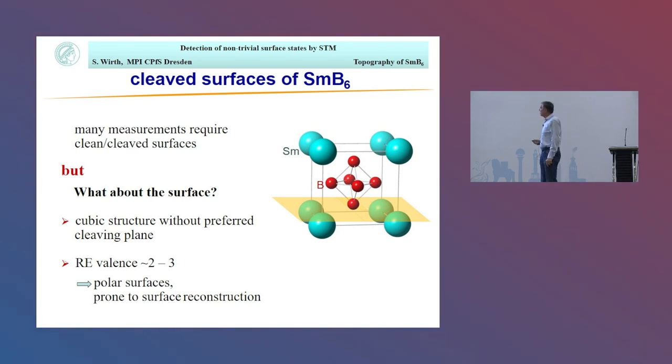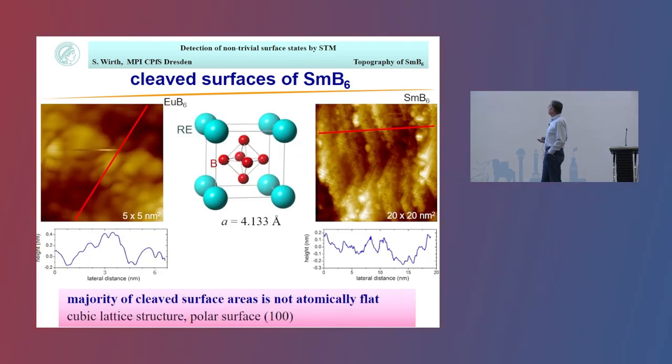But then we have to ask ourselves: what about the surface? Here in the case of samarium hexaboride, it's a cubic structure, so we don't have a preferred cleaving plane. And on top of that, the valence of the rare earth is between 2 and 3, so we end up with polar surfaces if we cleave along one of the main crystallographic axes. Polar surfaces are known to be prone to surface reconstructions.